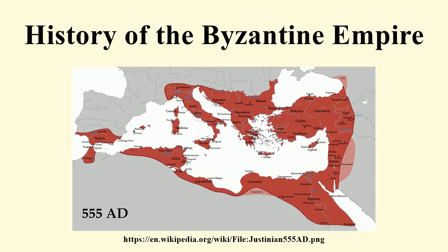During the reign of Justinian I, the Empire reached its greatest extent after reconquering much of the historically Roman western Mediterranean coast, including North Africa, Italy, and Rome itself, which it held for two more centuries.